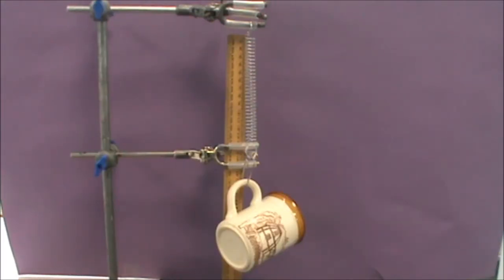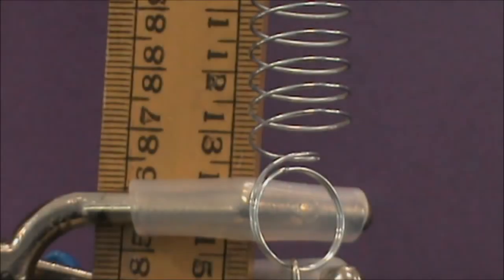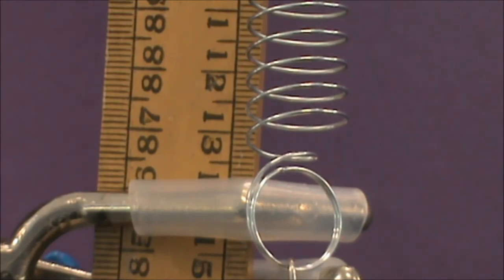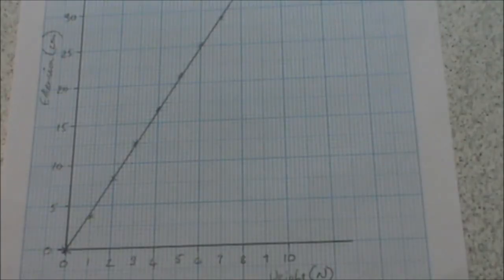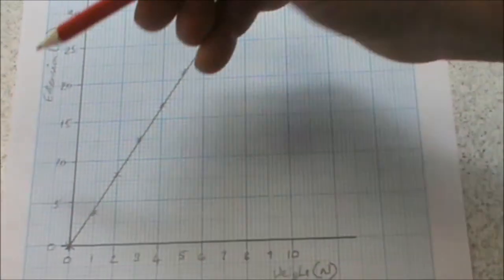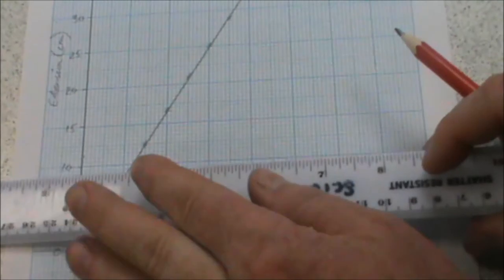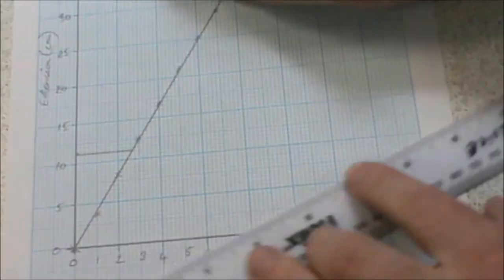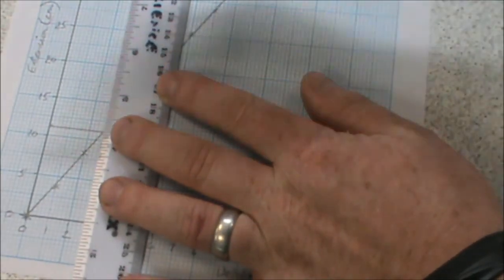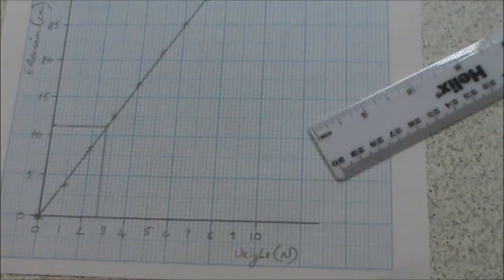Now we can take an object of unknown mass and hang it on our spring balance. And then we'll be able to calculate its mass. We can see that our spring has stretched to 13.4 cm. Take off your 2.2 original length which gives us 11.2 cm extension. Coming back to our graph we can find 11.2 cm on the y-axis. Draw across to our graph, and then draw vertically down to the x-axis. This tells us that our object has a weight of 2.3 Newtons.